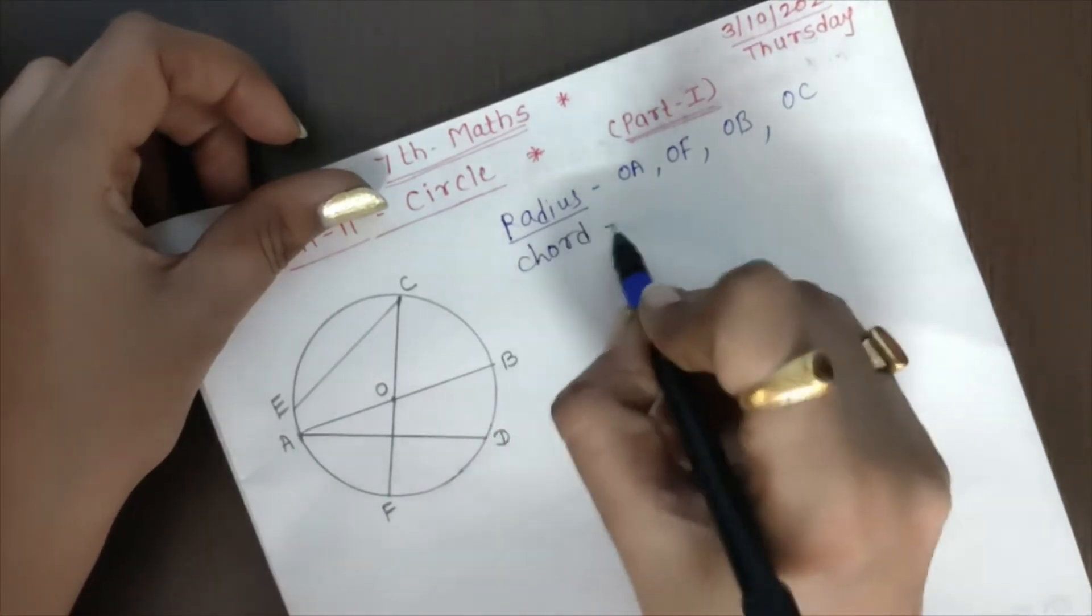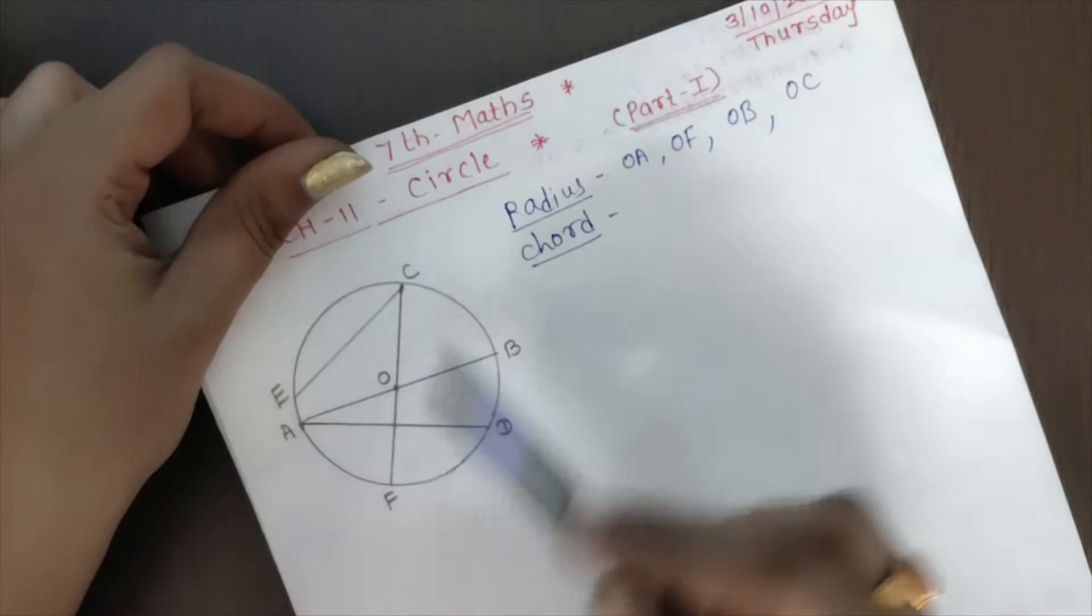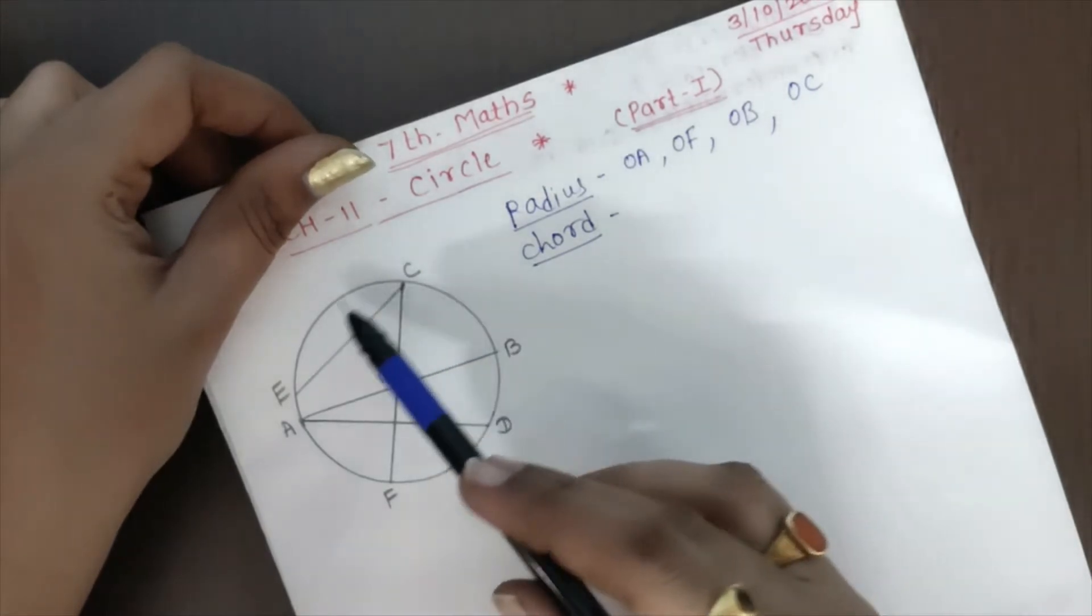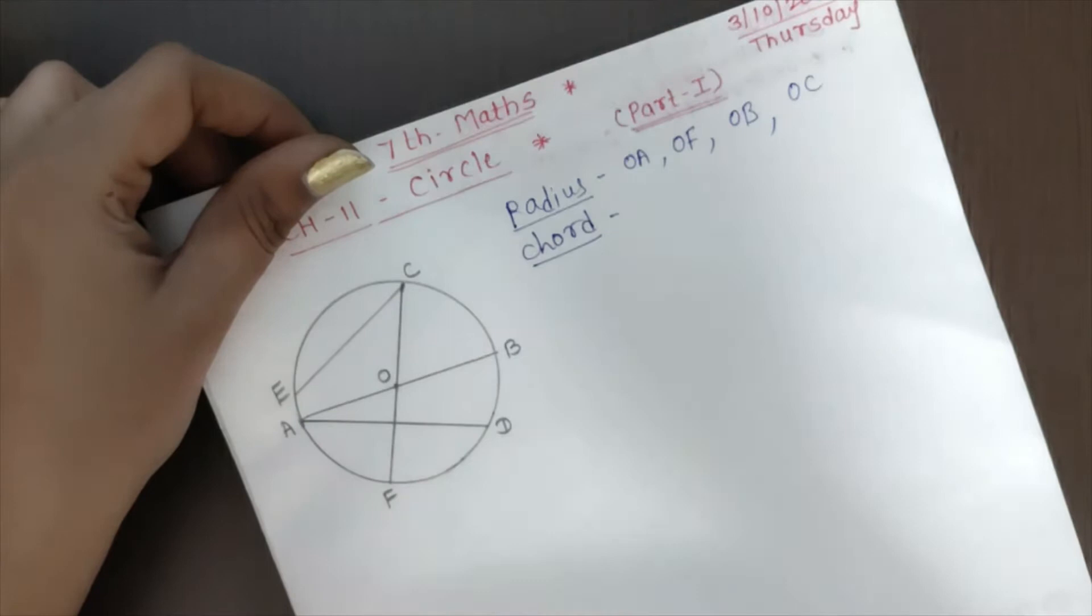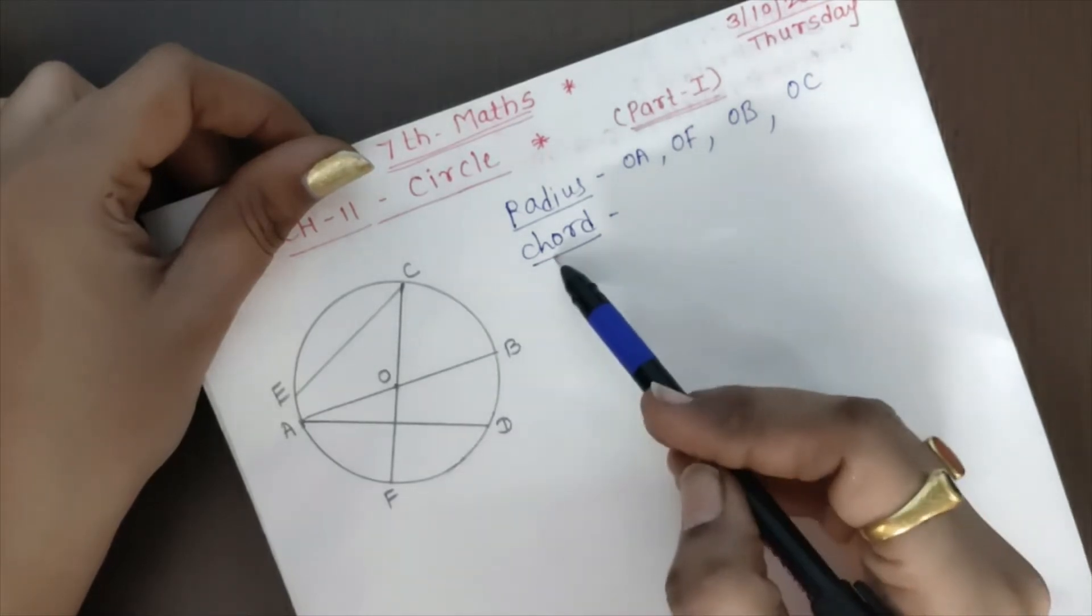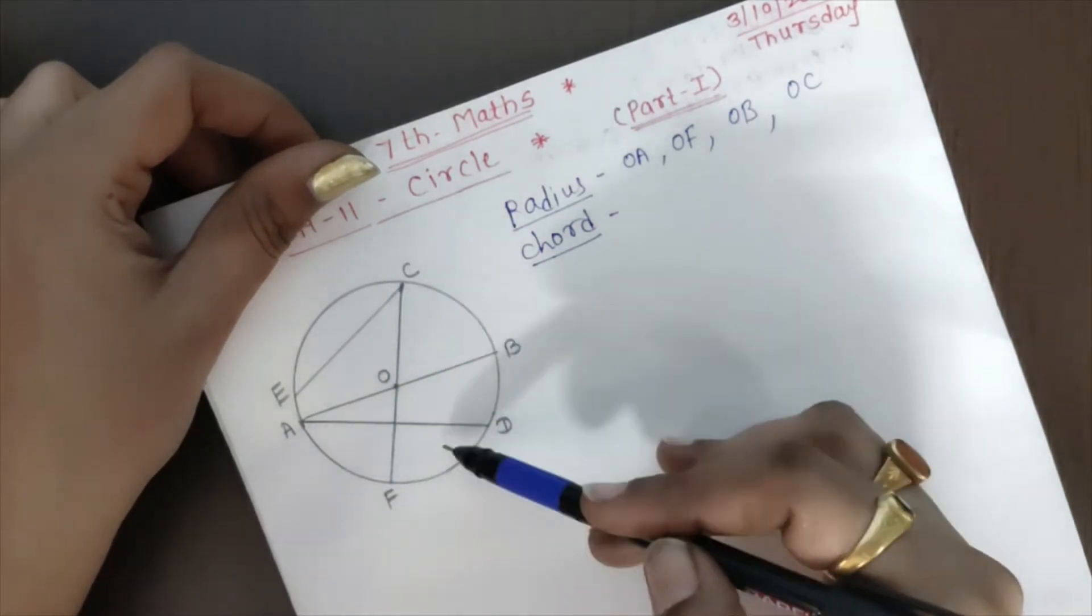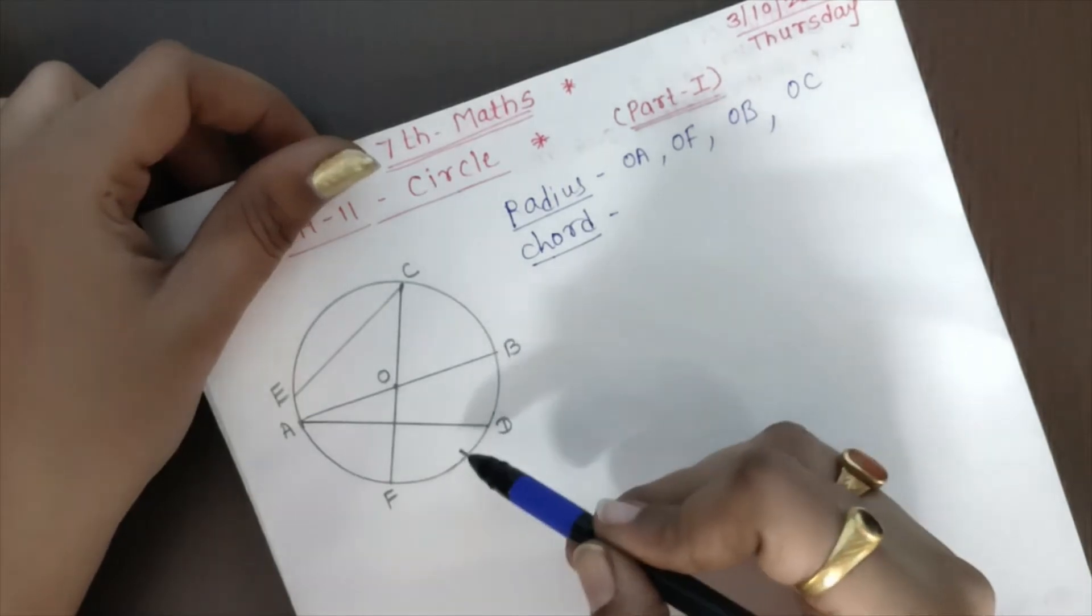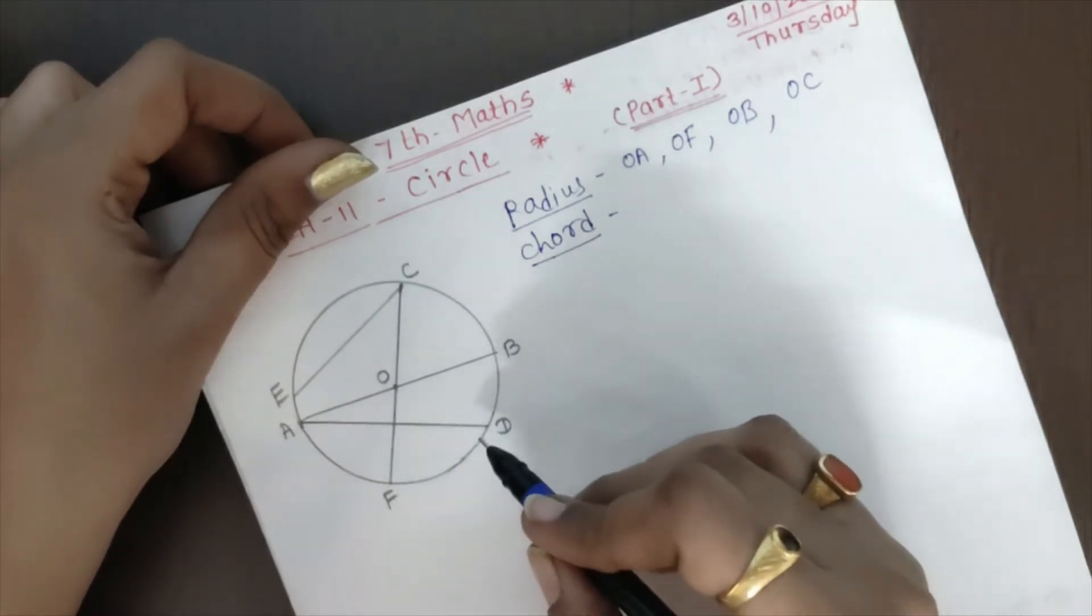Then what about chord? Any two points from the circumference, the line which joins any two point on the circumference, that line segment is called as chord of that circle. Tell me the names of the chords.